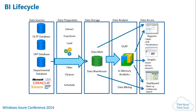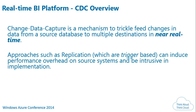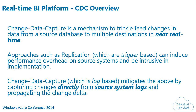All those trigger-based approaches impacted the source OLTP system in a big way. The new method is CDC — Change Data Capture. It's a mechanism to trickle-feed changes in data from a source database to multiple destinations in near real time. The key difference from trigger-based approaches is that CDC is log-based — it acts not on the MDF data files but on the LDF log files, so there is no overhead on the source system.